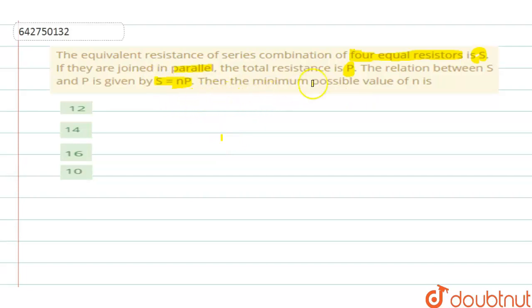Now what they are doing, they are taking four equal resistors. Let us say the four equal resistors, since they are equal, let the resistors be R. Each value of the resistor, let it be R.